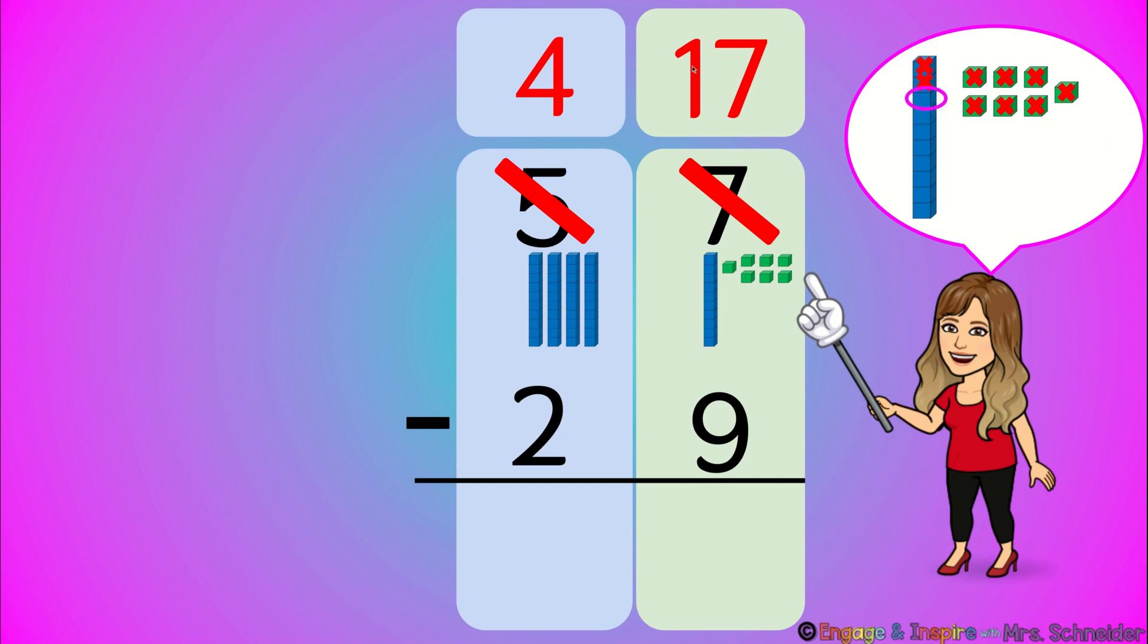You can cross out the base ten blocks. Alright, so I had 17 and I crossed off nine. One, two, three, four, five, six, seven, eight, nine. And so how many blocks do I have left? One, two, three, four, five, six, seven, eight. 17 minus nine equals eight.